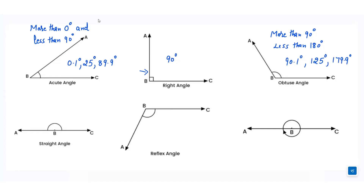The fourth type of angle is straight angle. The angle which is equal to 180 degrees is called a straight angle, and we represent this angle like this. You can see a half circle on a straight line — that's why we call it a straight angle. In any diagram, a half circle on a straight line represents a value of 180 degrees.